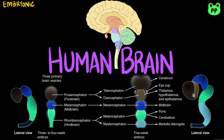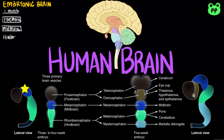All vertebrate brains develop from three embryonic regions: forebrain, midbrain, and hindbrain. By the fifth week of human embryonic development, five brain regions have formed from the three embryonic regions.